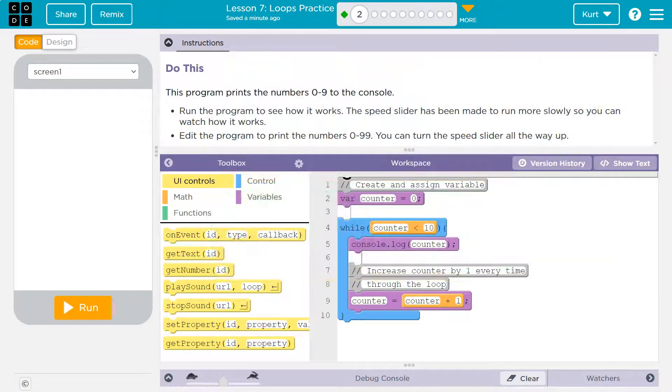This is code.org. Let's see what we're doing. This program prints the numbers zero to nine to the console. All right, let's test it out.